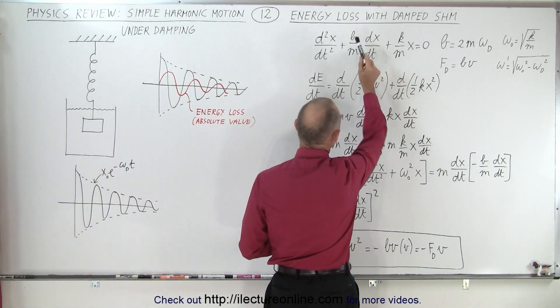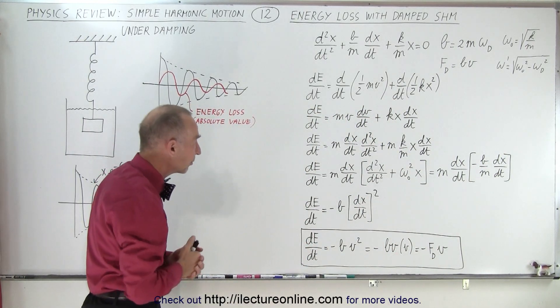How do we calculate the energy loss in a system like that? We start with the differential equation, including the damping factor. Notice here that b is equal to 2m times the omega sub d, where omega sub d is the damping frequency, or I should say the angular frequency.